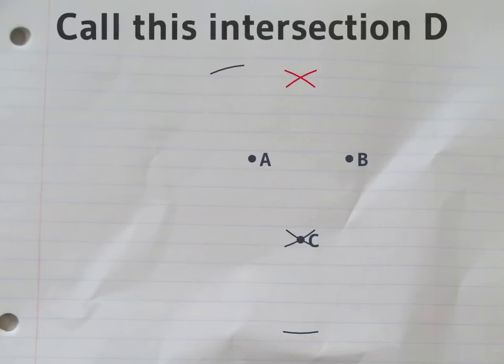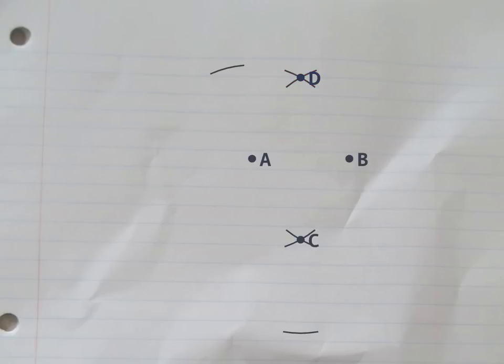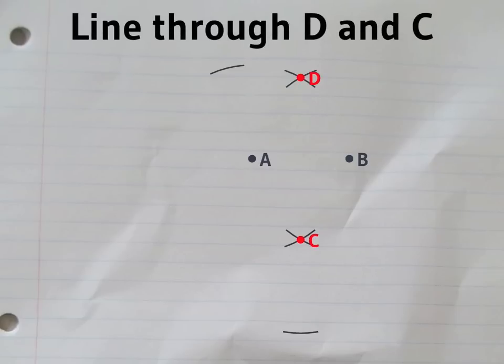We'll need a name for this top intersection. Let's call it D. Now, use a ruler to draw a straight line through C and D.